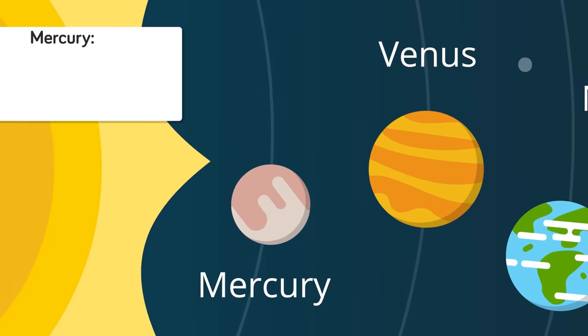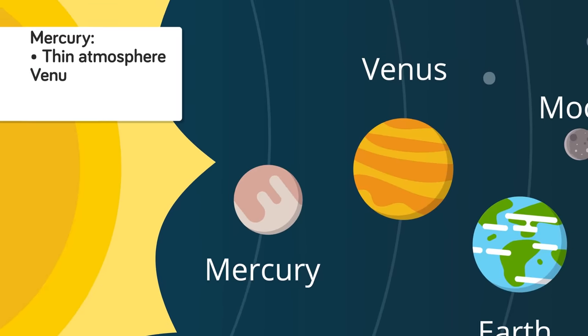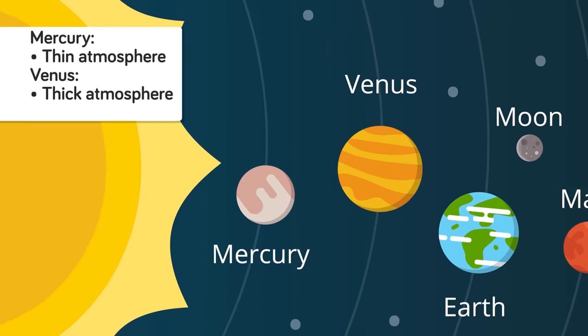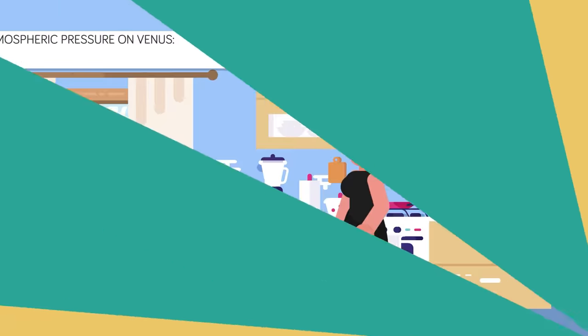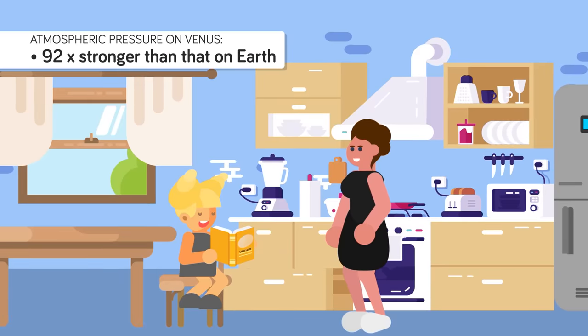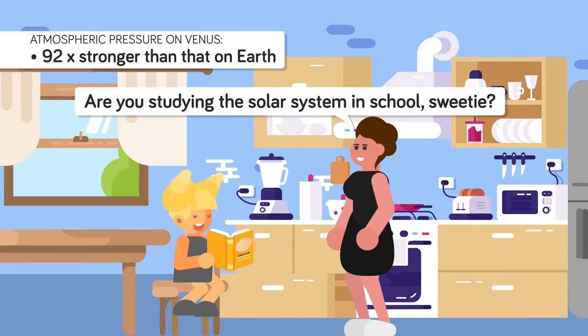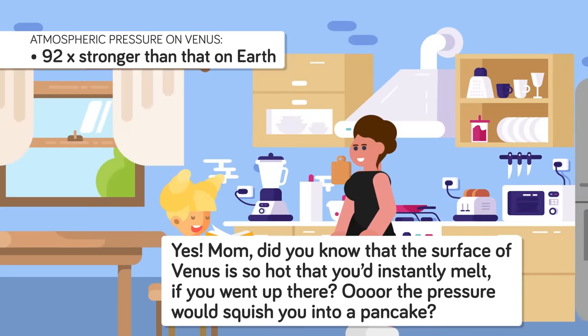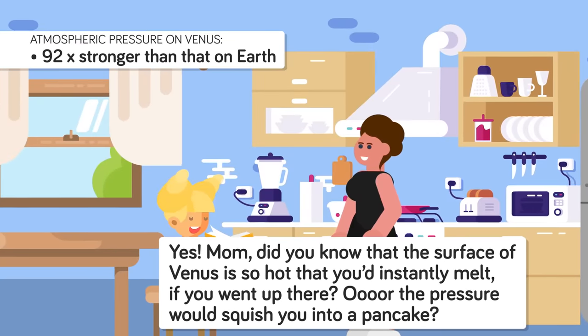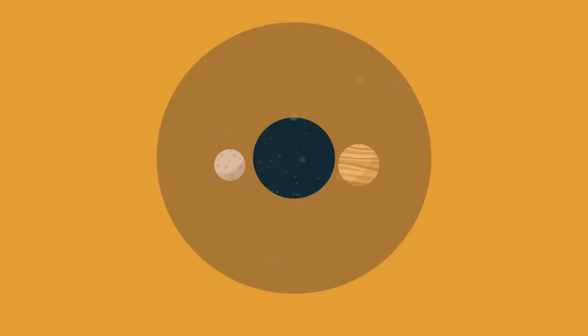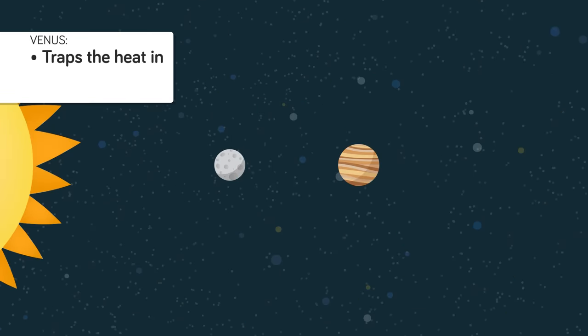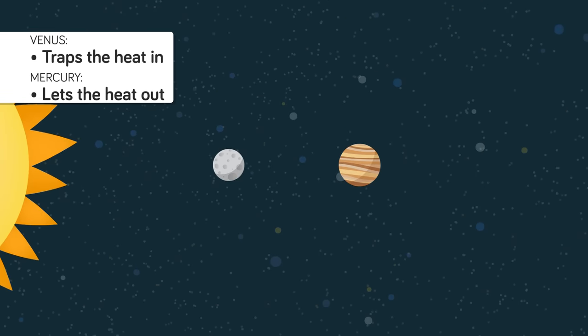The simple answer is Mercury has a very thin atmosphere, and Venus has a very thick atmosphere, consisting mostly of carbon dioxide. The atmospheric pressure on that planet is 92 times stronger than on Earth, so it would be like being 3,000 feet under water. In the words of NASA, if you somehow weren't melted on the surface of Venus, you'd be crushed. It's this thick atmosphere that traps the heat in, whereas Mercury lets the heat out into space.